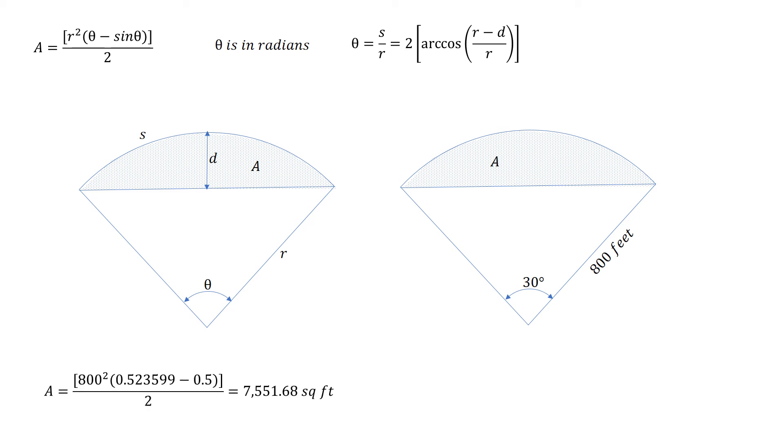This is our equation, which is one equation process: 800 squared multiplied by 0.523599 minus 0.5. So again, that theta is in radians. Divide that by two, and we get an area of 7,551.68 square feet. That's the area we have shaded here in this problem.